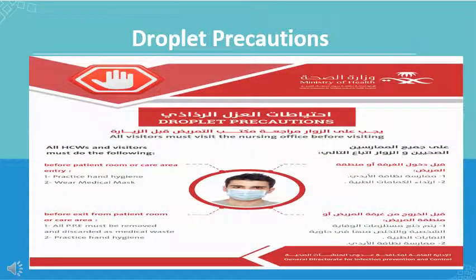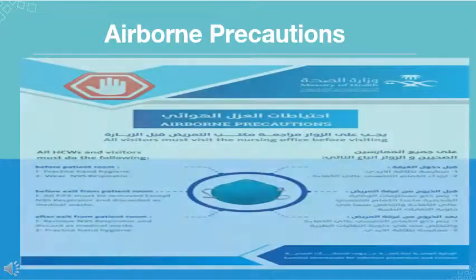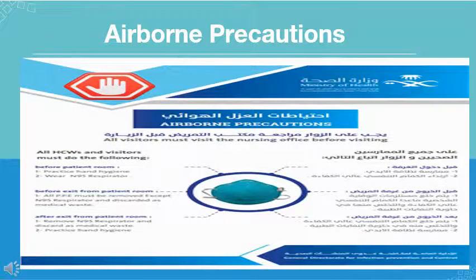We have to implement specific transmission-based precautions, such as droplet and airborne transmission-based precautions. In this slide, we have a color-coded red droplet precaution sign that explains to all healthcare workers in bilingual language the type of measures that must be implemented for patients under droplet isolation precaution. For airborne transmission-based precaution, we follow specific measures written in bilingual color-coded blue for patients under airborne transmission-based precaution.